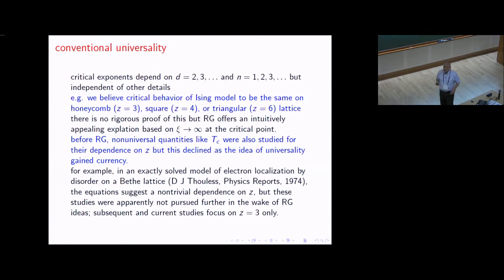We came to believe so much in universality that anything which was not universal—like critical temperature of model, exact critical disorder where electrons got localized, or the lattice coordination number—were abandoned. Even in my own thesis, I showed that not only were the exponents unaffected by several details of the Hamiltonian, they were also unaffected by the way you set up renormalization group.